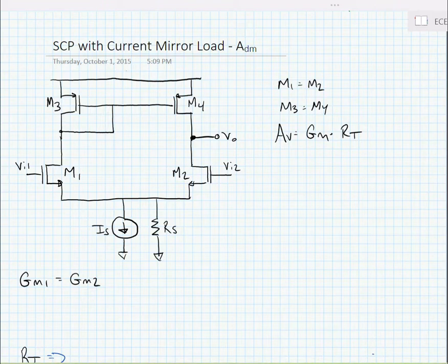We're going to assume that we have symmetry - in other words M1 is equal to M2 and M3 is equal to M4. And we know as always that our voltage gain AV is equal to minus GM times RT.